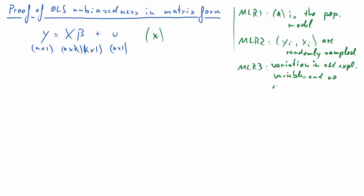In matrix form we'll say that x is full rank. So full column rank, so we don't have any linear dependencies between the variables.